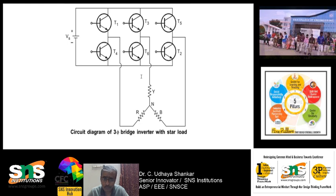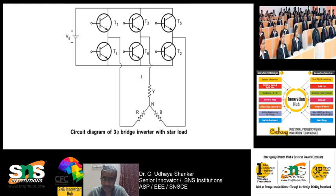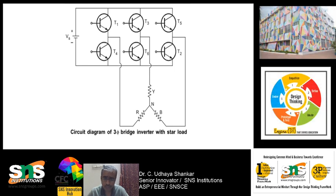The upper transistors T1, T3, and T5 produce positive voltage, whereas the lower transistors T4, T2, and T6 produce the negative voltage. With this introduction let us go into the 180-degree mode of conduction.